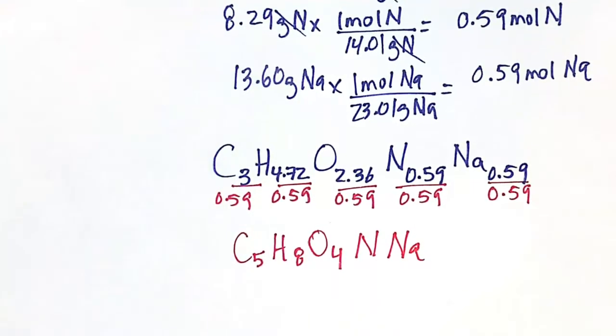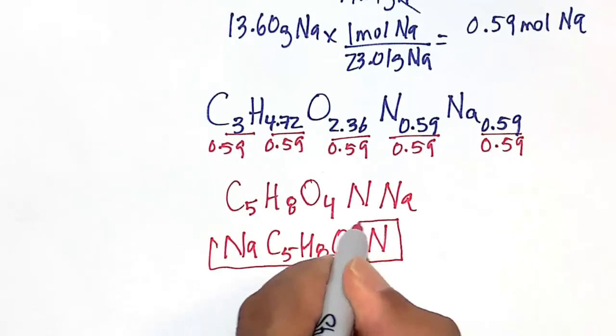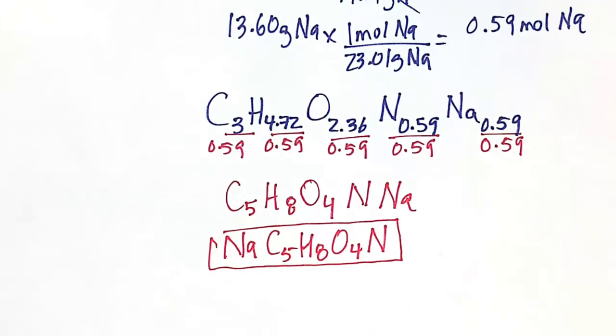So, I'm going to just rewrite this a little bit, having the Na first. You usually want to have the metals first. Alright, so is this the formula of MSG? That's what we're getting.